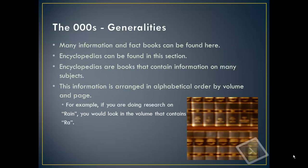The triple zeros are called generalities. Information and fact books can be found here. A lot of the Guinness Book of World Records and the hundred grossest things books that you guys enjoy are found in this section. Encyclopedias can also be found here. Encyclopedias are books that contain information on many different subjects, arranged in alphabetical order by volume and page. So for example, if you're doing research on rain, you would look in the volume that contains R-A.